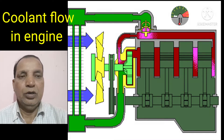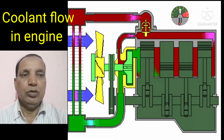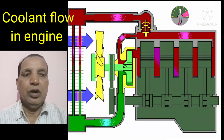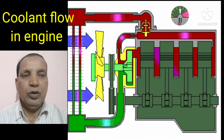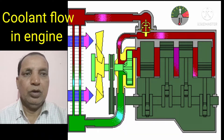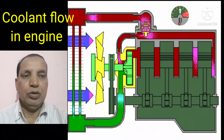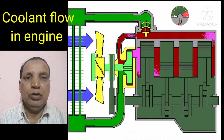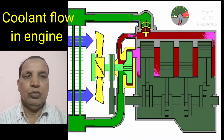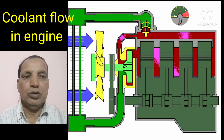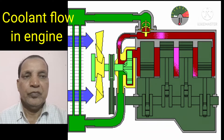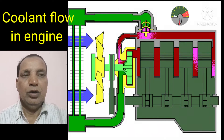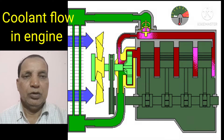When the thermostat will be open, coolant directly goes to the radiator. When the thermostat will be closed, coolant flows through the bypass coolant pipe. This is the process for how coolant flows in the engine. The coolant is sucked through the water pump from the bottom side of the radiator.